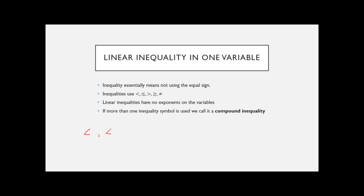The less than or equal to symbols open toward the bigger number. If you have the less than symbol, the number on the left is the smaller one; with the greater than symbol, the number on the left is the bigger one. It always opens toward the bigger number, which can help you determine which symbol you're looking at.